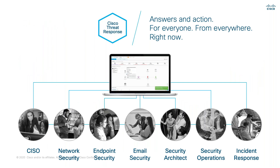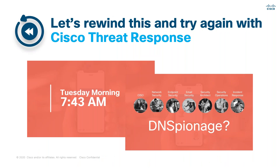Cisco Threat Response allows you to investigate and respond to threats quickly across your entire solution stack. It's designed to be super simple — very easy to configure with a couple of API keys — and designed to be super quick. Regardless of what role you're in or where you're situated geographically, it gives you information at your fingertips to get answers in two clicks about what's going on in your environment.